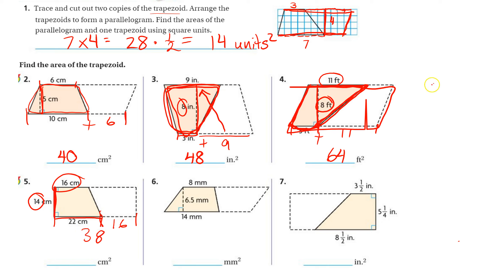So now we have 38 times 14, length times width. That will tell us the area of the entire rectangle. 4 times 8 is 32, 4 times 3 is 12, plus 3 is 15. Done with that 4, kiss it goodbye, hug it out below. 1 times 8 is 8, 1 times 3 is 3. Add it all up. 2, 13, 5.